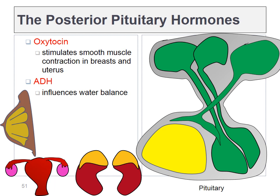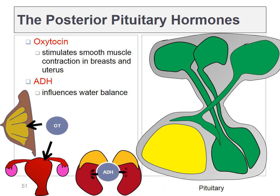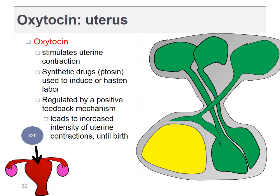The posterior pituitary hormones were made in the hypothalamus and released from the posterior pituitary. The first is oxytocin and the second ADH. Oxytocin does a number of things, including triggering the letdown reflex and smooth muscle contractions in the uterus. ADH targets the kidneys to hold on to water, which should lead to an increase in blood pressure. Oxytocin triggers smooth muscle contractions in the uterus, which signal for increased levels of oxytocin — a positive feedback loop that leads to more frequent and stronger contractions until childbirth occurs. Synthetic oxytocin, called pitocin, can be given to women to speed up delivery.